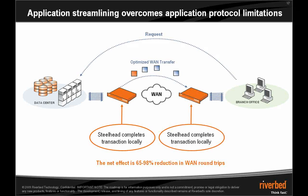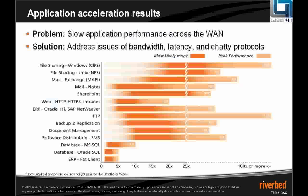The combined effect is a 65 to 98% reduction in WAN round trips, and it's this part of the technology that's truly going to give you LAN-like performance over the network. We have a very large range of applications that we support for this — much more comprehensive than any other vendor on the marketplace, hence our position as the market leader.